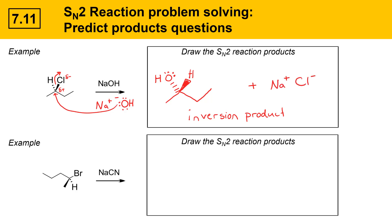Here's another example of an SN2 substitution reaction with a secondary alkyl halide. I'll point out the polarization of the carbon-halogen bond. The nucleophile here is sodium cyanide. The Lewis structure of sodium cyanide is sodium+ with a carbon-nitrogen triple bond and lone pairs on both carbon and nitrogen. Since carbon is a much stronger nucleophile than the neutral nitrogen, it's the carbon's lone pair that will attack the partially positive carbon.